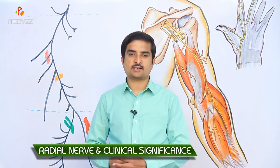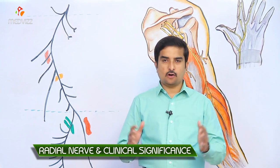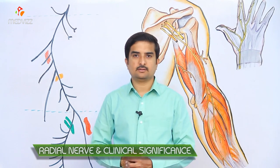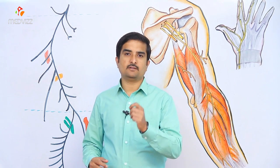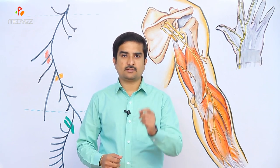In today's discussion we are going to discuss the anatomy of the radial nerve as well as its clinical importance. The radial nerve is one of the major peripheral nerves of the upper limb. In this session we will discuss the course of the radial nerve as well as its clinical importance.